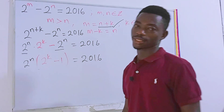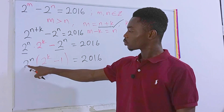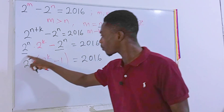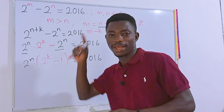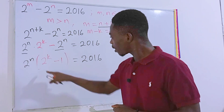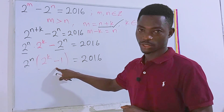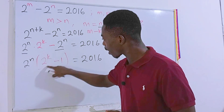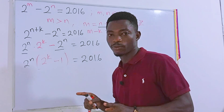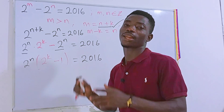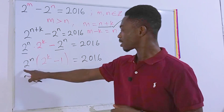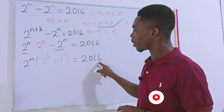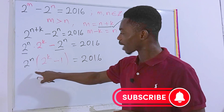Notice that 2 to the power n is an even number since n is an integer. Inside the parenthesis, 2 to the power k is also even (k is an integer), but subtracting 1 from any even number gives an odd number. So we have an even number times an odd number. This means we need to rewrite 2016 in the form even times odd.